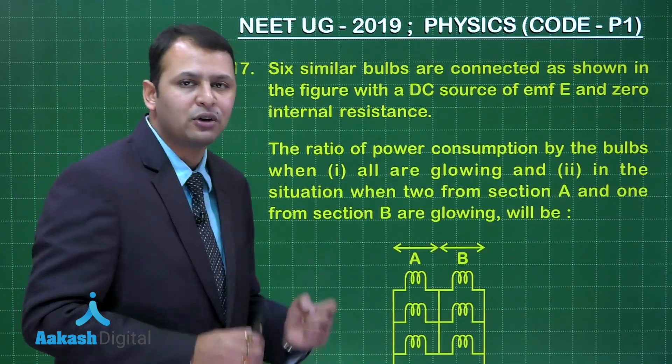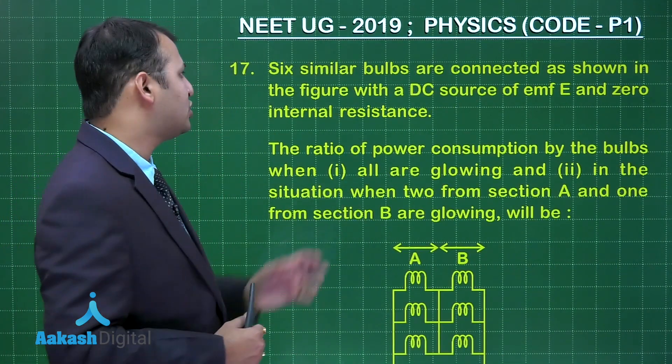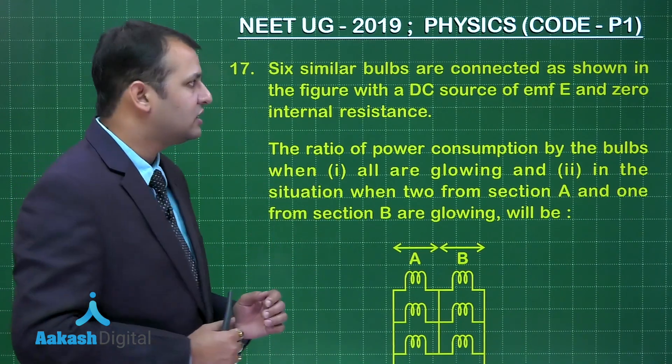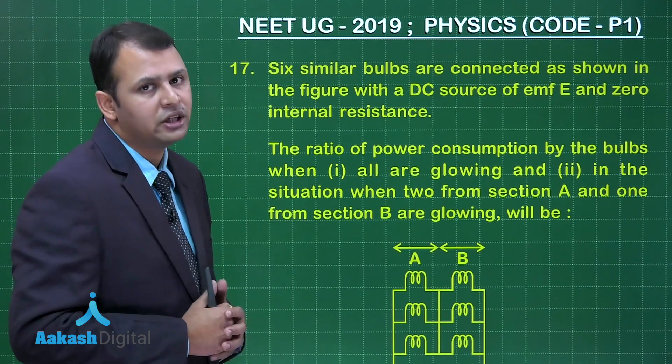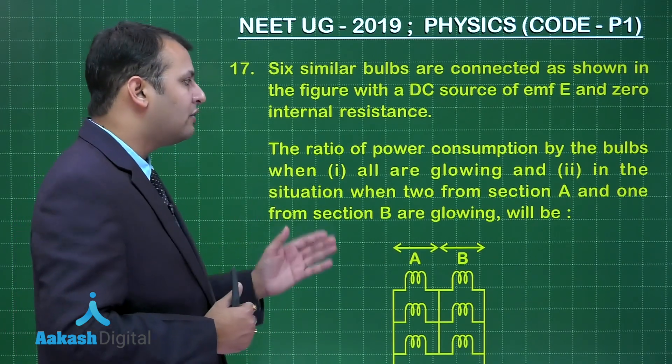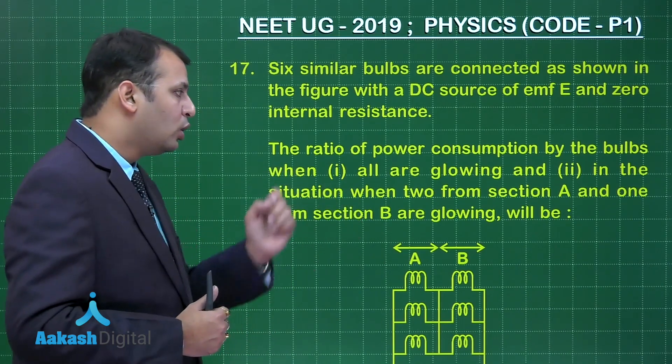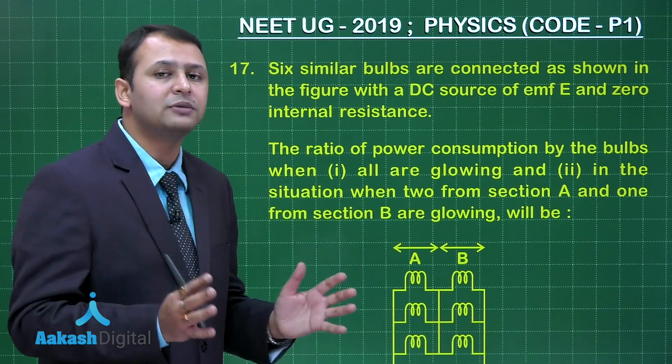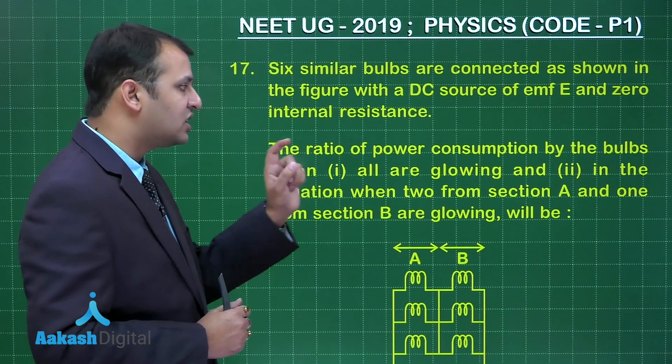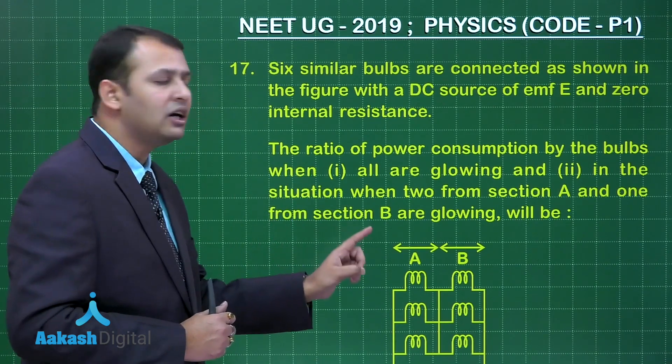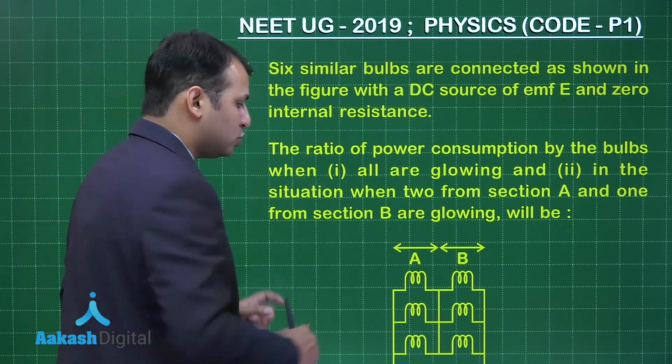The question belongs to chapter of current electricity. As per the question, there are six similar bulbs which are connected as shown in the figure with a DC source of EMF E and zero internal resistance. The ratio of power consumption by the bulbs when all are glowing, that means all bulbs are active, second case in the situation when two from section A and one from section B are glowing. Let's see this in the diagram.